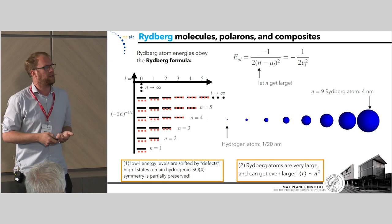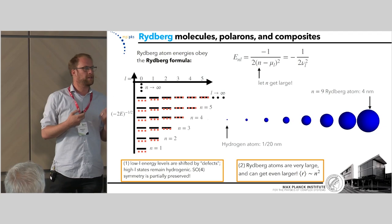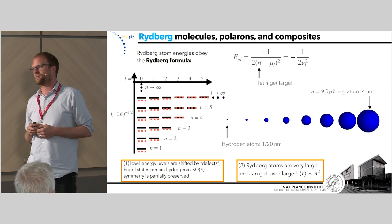The other thing of course is that Rydberg atoms are very large. They get larger like the square of the principal quantum number, and this means their electron really wanders a distance comparable to typical distances in ultracold gases.